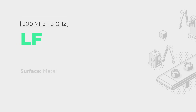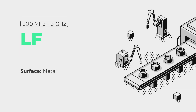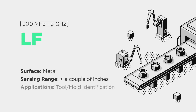Low frequency, or LF, is ideal for applications when sensing RFID tags on metal. Sensing ranges vary depending on the hardware selected, but you can expect sensing ranges to be less than a couple of inches. Typically we see low frequency used for tool or mold identification, since those tags will be mounted on metal.